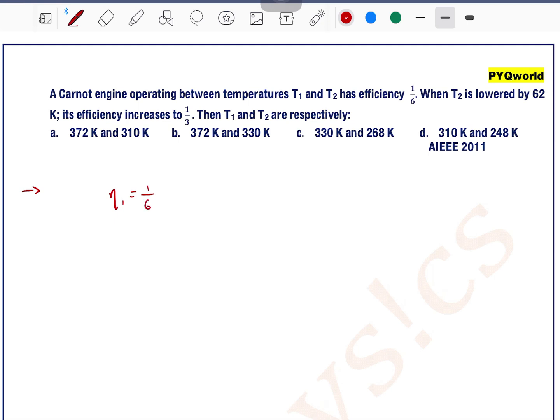In first case, it is given that efficiency is 1 by 6. And let's say temperatures are T1 and T2. In second case,